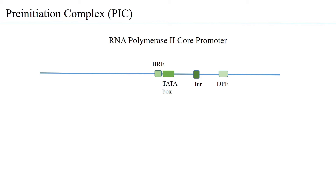One or two of these elements may not be present in a particular promoter, and other cis-acting elements may also be present. For example, there is the motif ten element (MTE), which is downstream of the initiator site; the DCE, also downstream of the transcription start site; and XCPE, which encompasses the transcription start site. These are the various cis-acting elements possibly present in core promoter regions.